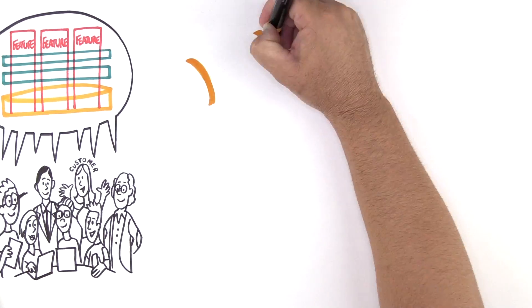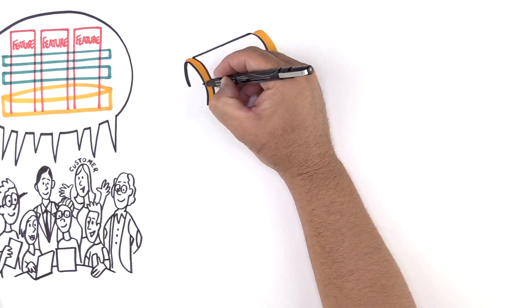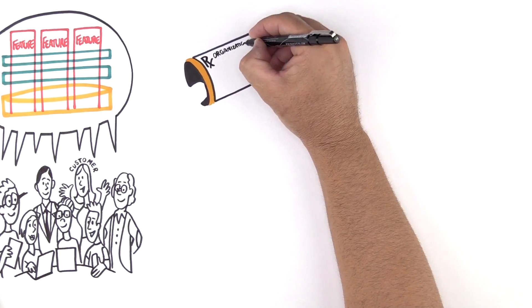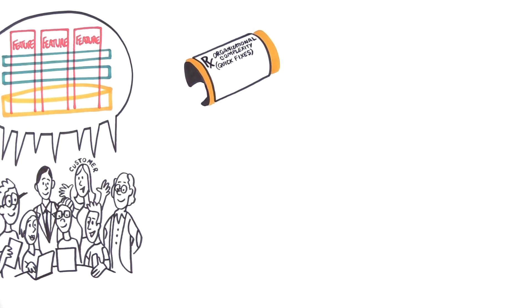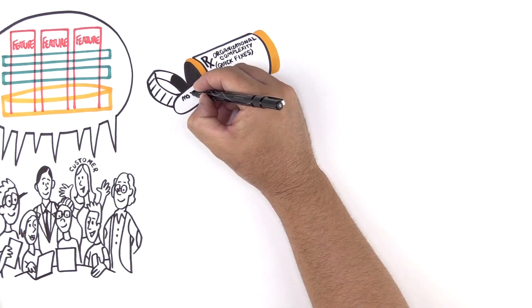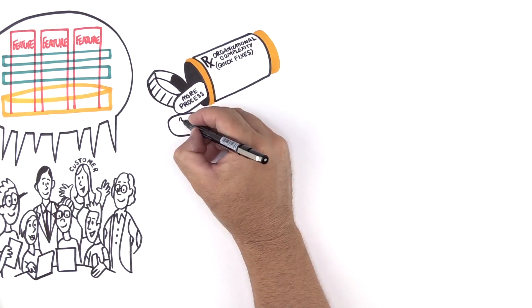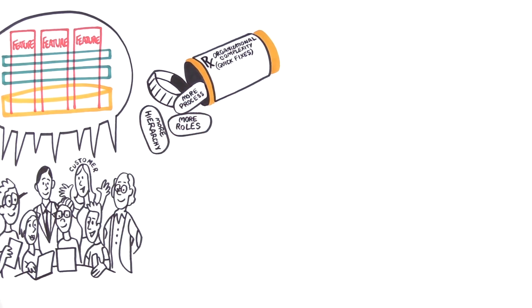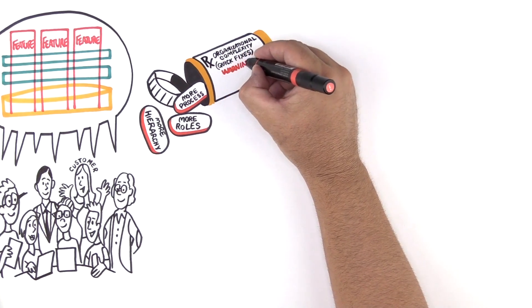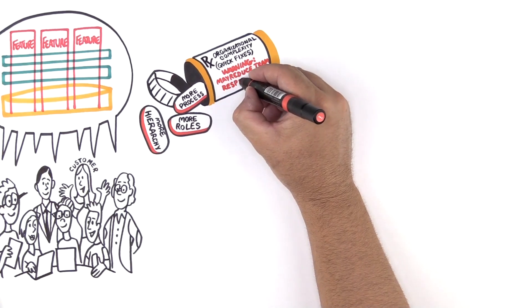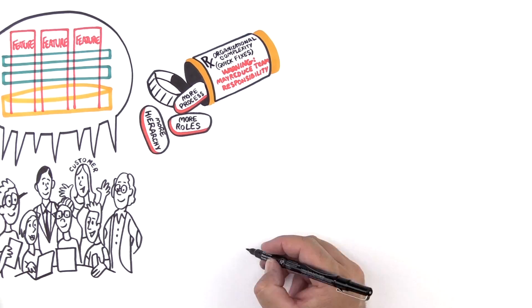Organizations often try to solve immediate problems by adding complexity. For example, let's say our product crashed in production because a team neglected to run a test. My first reflex as a manager would be to impose a prescriptive process, steps on the teams, assign someone to a new specialized role, or form a new department to prevent this error in the future. But all three of these quick fixes can exacerbate the underlying problems by reducing team responsibility.